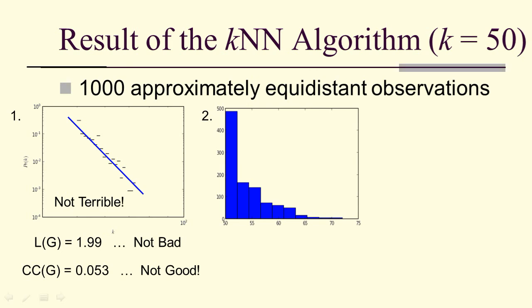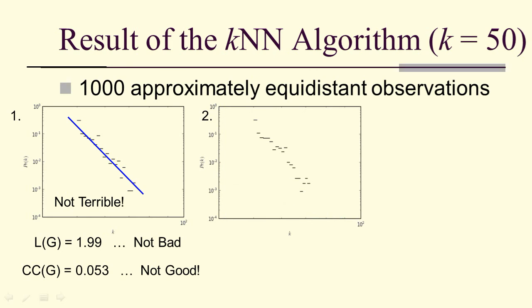So let's look at how the second algorithm does. It looks sort of scale free, and there's the log-log plot of that histogram. The average shortest path length is not too bad, but again, the clustering coefficient is not very good.